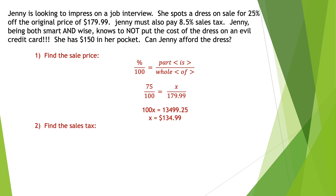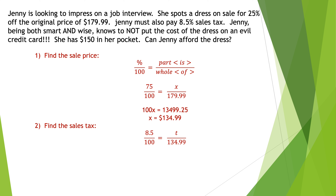Now that's the first part. They also want the price with sales tax, but to find that I first need to figure out what the sales tax is. The problem says you're paying 8.5% sales tax. So again, begin with the percent proportion, set it up, cross multiply. See if you can get the tax value — I'll show you the correct solution right after. The 8.5 goes in the percentage place and the tax is the unknown part of the whole cost.